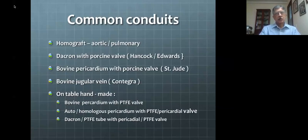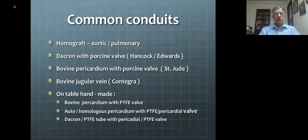The second common type is the Dacron conduit with porcine valve, where the outer tube is made of Dacron and within it is placed a porcine aortic or pulmonary valve. These were distributed by commercial companies — the Hancock as well as the Edwards. Another conduit is bovine pericardium with a porcine valve, marketed by St. Jude, where the tubing was made of bovine pericardium housing a porcine valve within a stent.